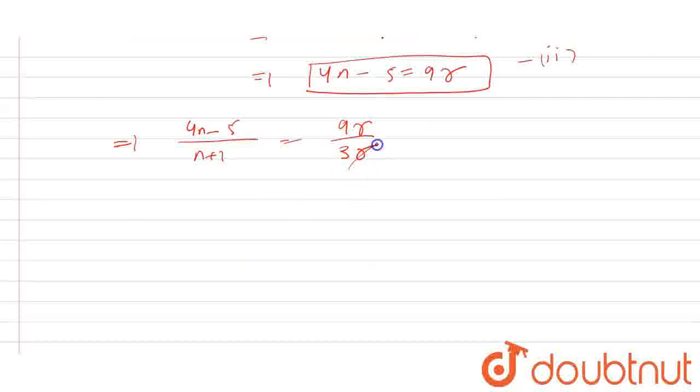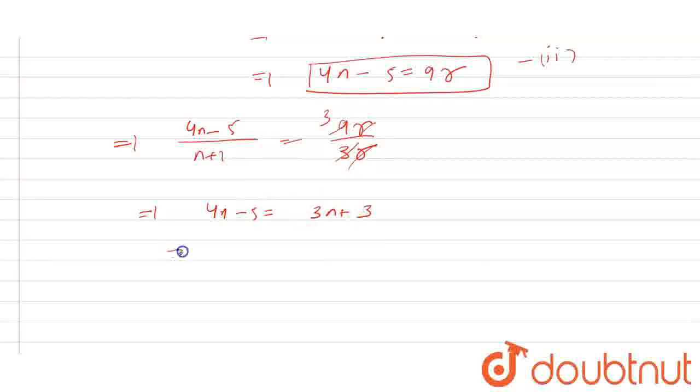So from here, the r's cancel, this is 3 times, so 4n - 5 = 3n + 3. Therefore, 4n - 3n gives n = 8.